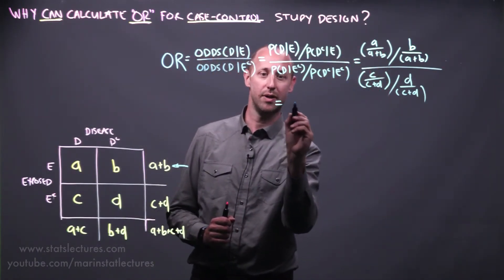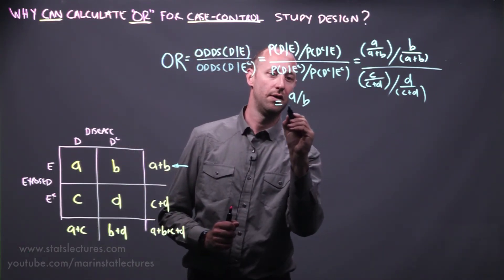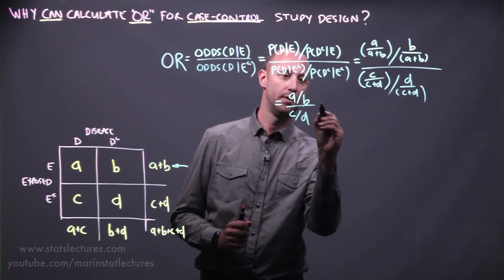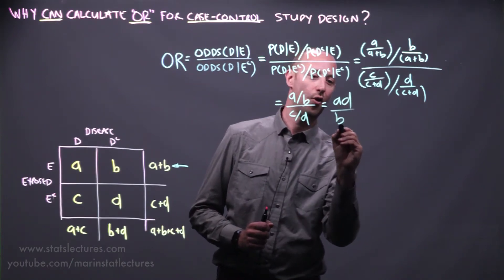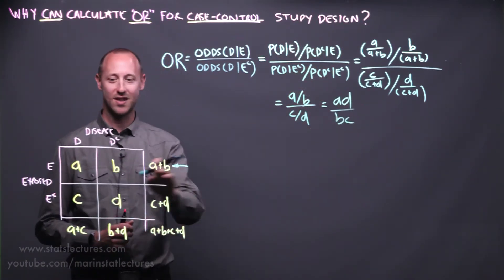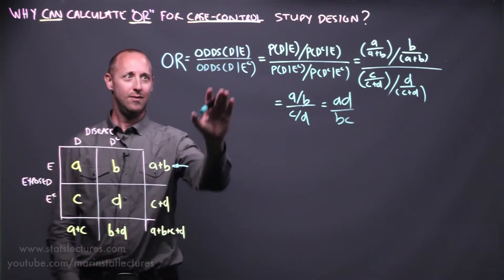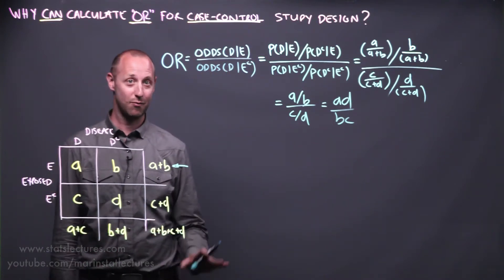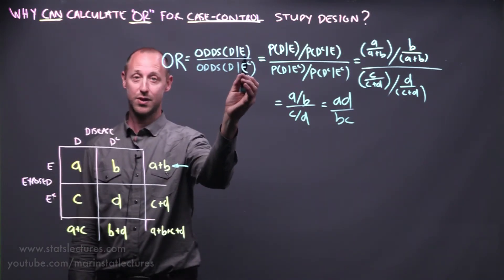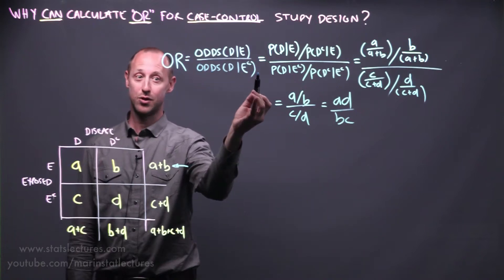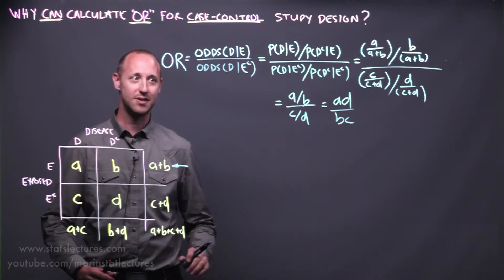If you work out the algebra, this comes out to A over B divided by C over D, or equivalently AD over BC. So you may recall this formula — the odds ratio is AD over BC. I think it's a lot more intuitive, rather than saying the odds ratio is AD over BC, to say the odds ratio is the odds of getting the disease for someone who's exposed relative to the odds of disease for someone who's not exposed. Thinking of the odds ratio that way tells you what it is — AD over BC doesn't actually tell you what it is.